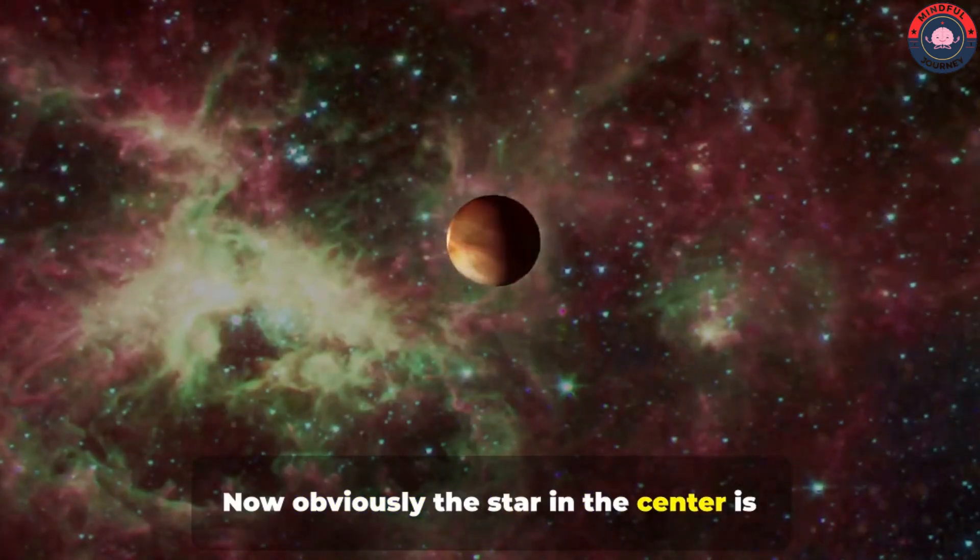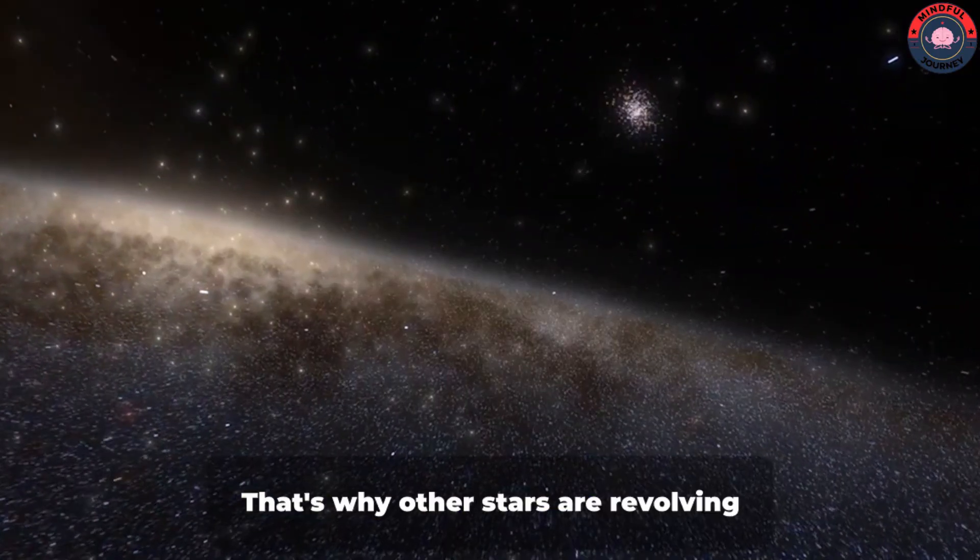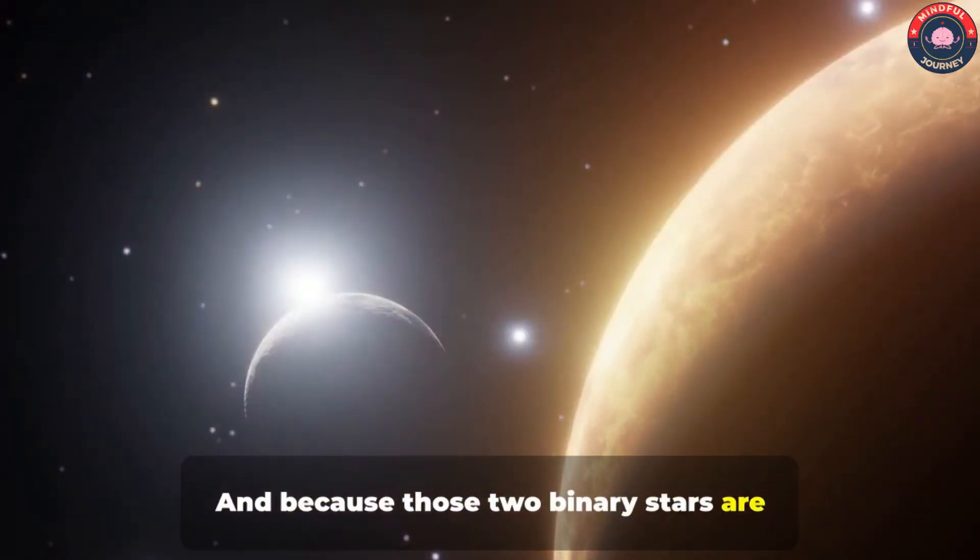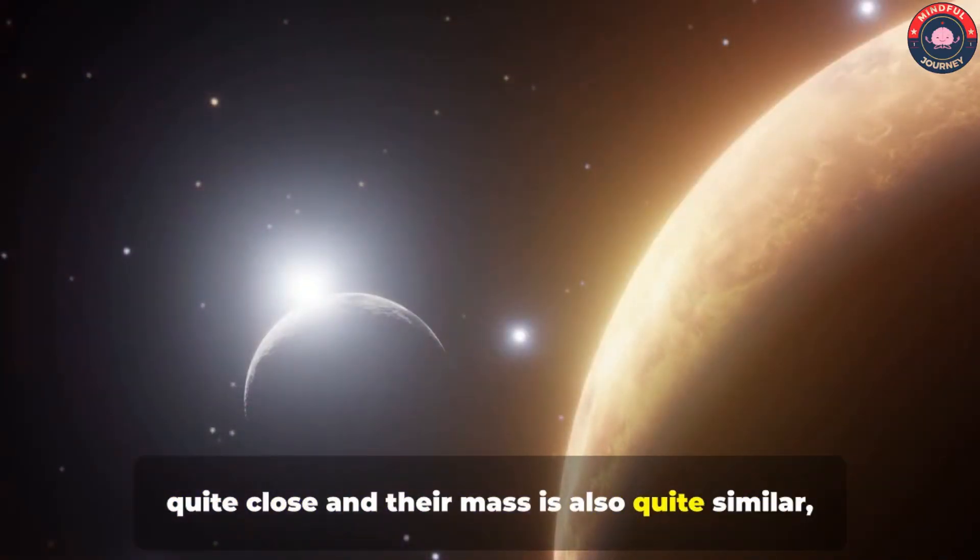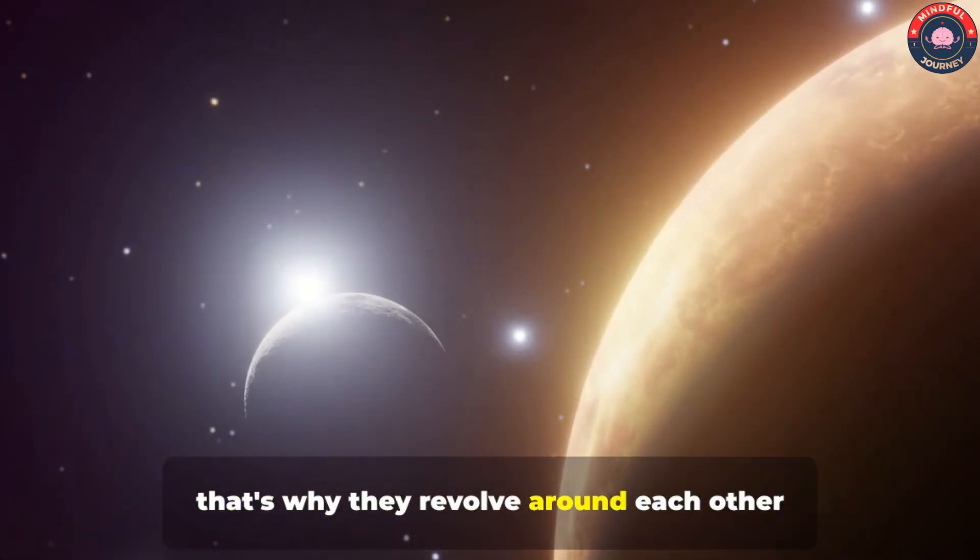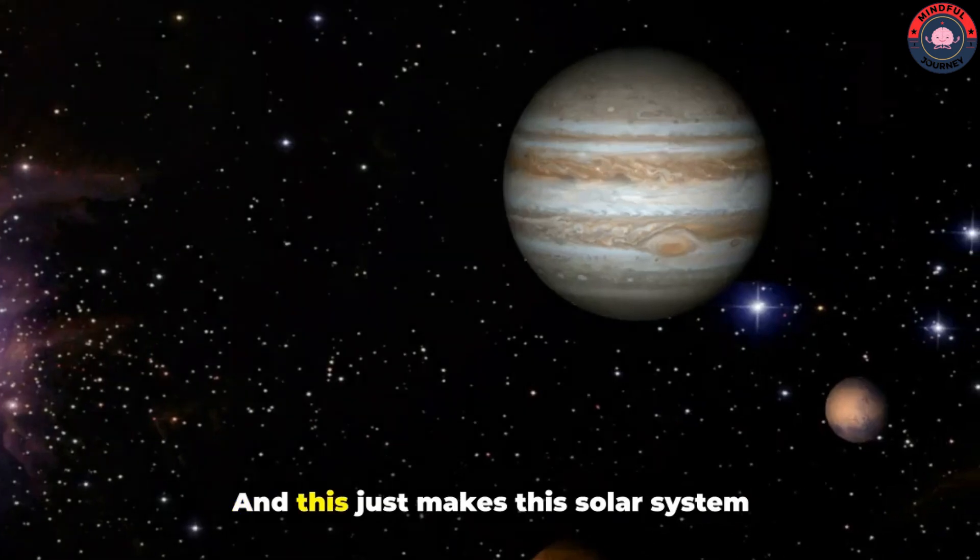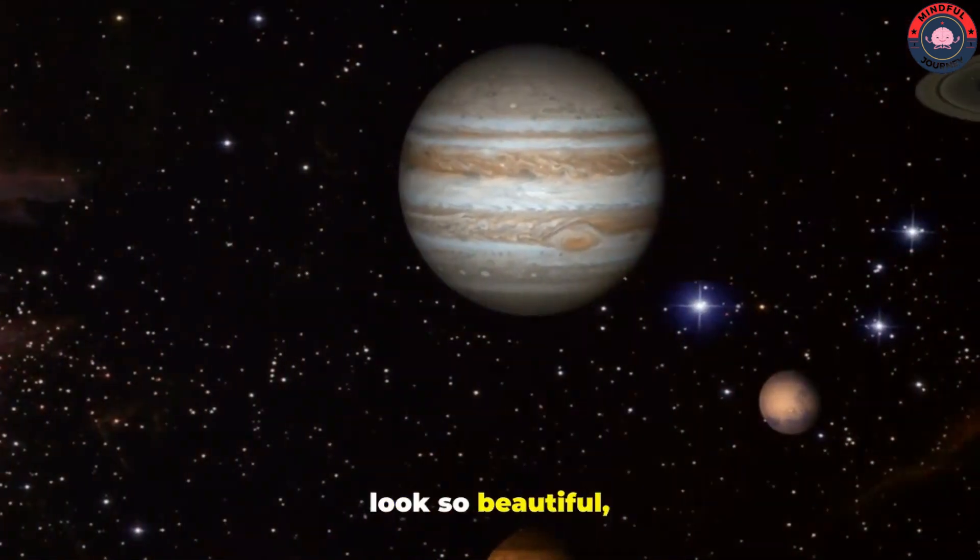Now obviously the star in the center is quite big. That's why other stars are revolving around it. And because those two binary stars are quite close, and their mass is also quite similar, that's why they revolve around each other, and also revolve around the main star. And this just makes this solar system look so beautiful, right?